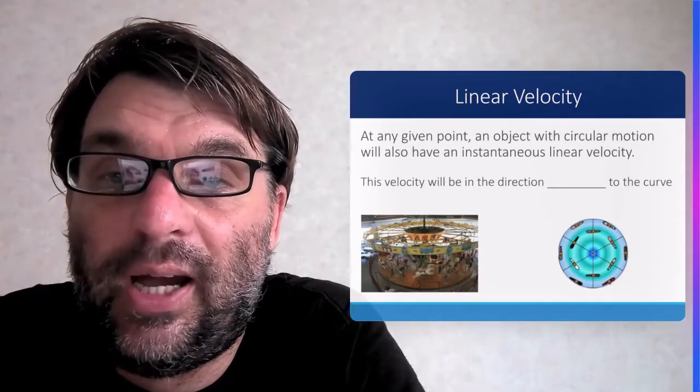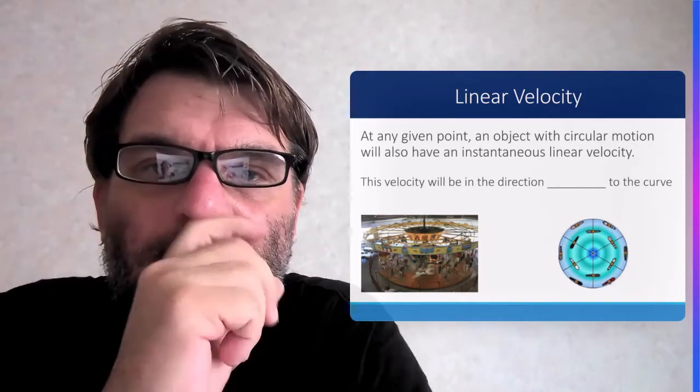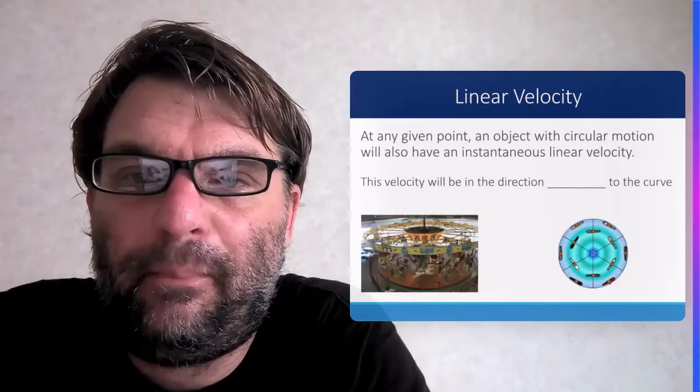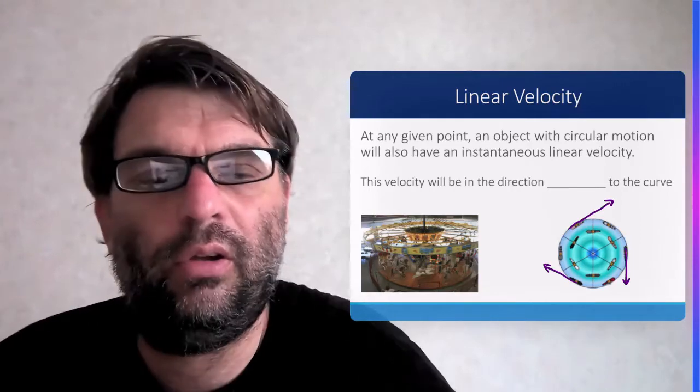So you see that here with this Ferris wheel. Basically, the velocity of the horse, in terms of linear velocity, is going to be a tangent to the curve.